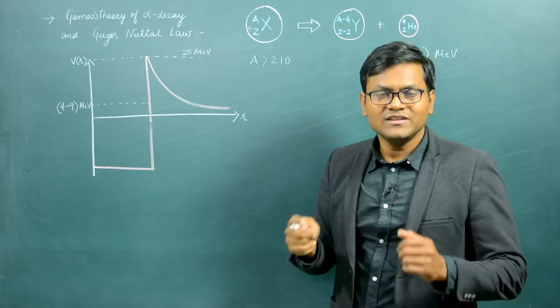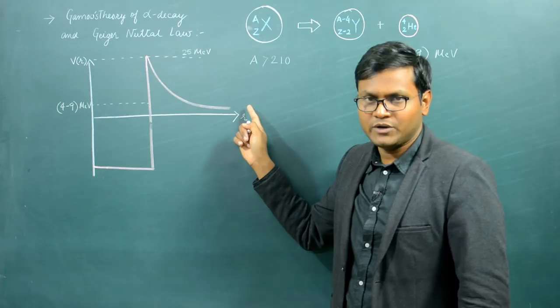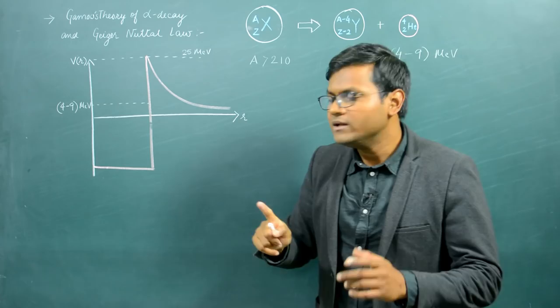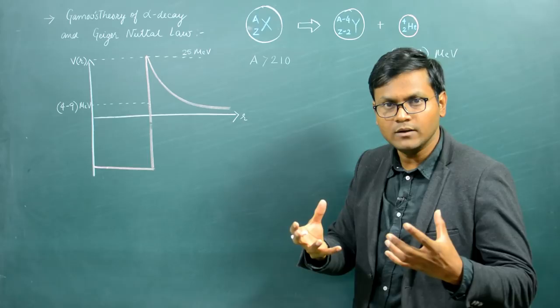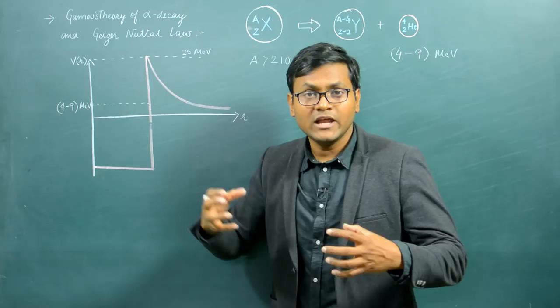This is very puzzling. The alpha particle coming out of the nuclear potential well has energies up to 9 mega electron volts, while the potential barrier itself has a height of around 25 mega electron volts. How can a particle with kinetic energy almost 15 to 20 mega electron volts less than the height of the potential barrier still escape it?